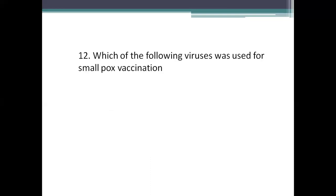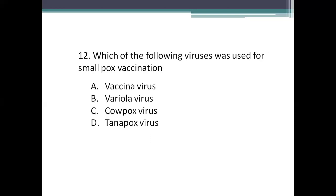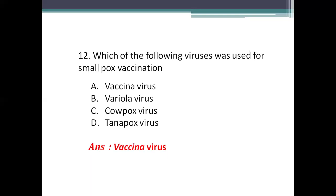Next question: which of the following viruses was used for smallpox vaccination? Option A: Vaccinia virus. Option B: Variola virus. Option C: Cowpox. Option D: Tanapox. The right answer is Vaccinia virus, which is used for prevention of smallpox infection. The first smallpox vaccine was given by scientist Edward Jenner, and because of that effective vaccine, smallpox has been completely eradicated.